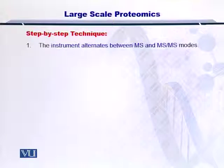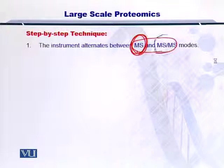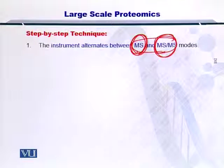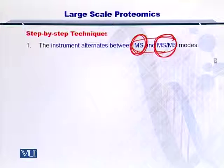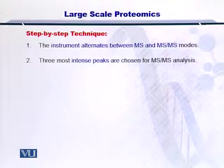The mass spectrometer shifts between MS1 and MS2 modes. First, you perform MS1 for the whole peptide, followed by its fragmentation and MS2. So once peptide A is analyzed, you select peptide B, perform MS and MS-MS on it, then move to peptide C, and so on. The three most intense peaks are chosen for MS-MS analysis, meaning the intense peaks represent confident detections and that molecule is definitely present in the sample.